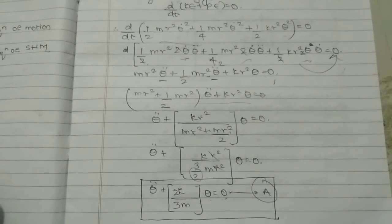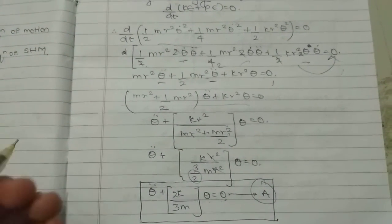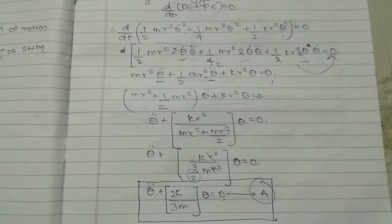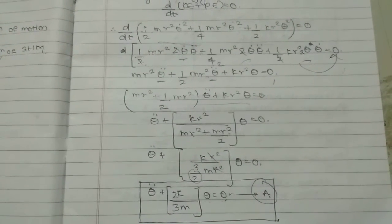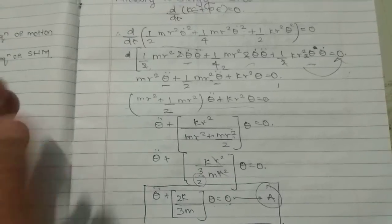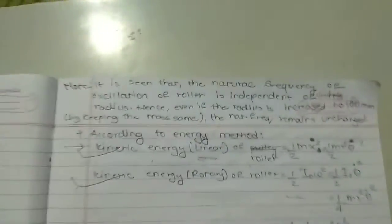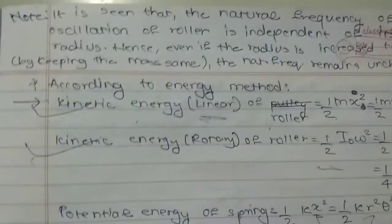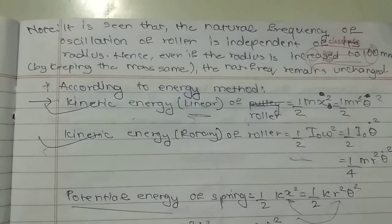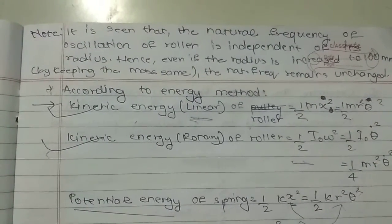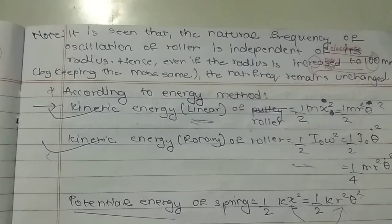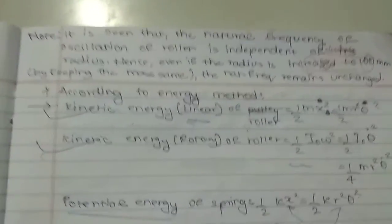After solving that we get the same answer: 2.59 hertz. This is because the natural frequency of oscillation of the roller is independent of its radius. Hence, even if the radius is increased to 100 mm while keeping the mass the same, the natural frequency remains unchanged.